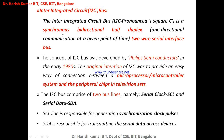I2C is bi-directional, meaning communication can happen in both directions, but it is half-duplex — meaning communication can only happen in one direction at a time. When communication is happening in one direction, it cannot simultaneously happen in the other direction. Once it finishes, communication can proceed in the other direction.